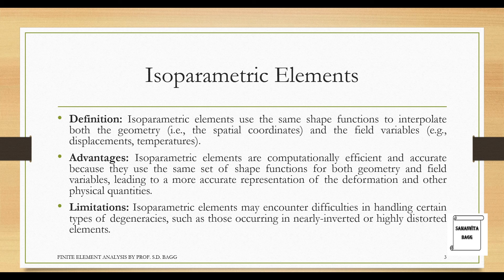Isoparametric elements are computationally efficient and accurate because they use the same set of shape functions for both geometry and field variables, leading to a more accurate representation of the deformation and other physical quantities. Limitations: isoparametric elements may encounter difficulties in handling certain types of degeneracies such as those occurring in nearly inverted or highly distorted elements.